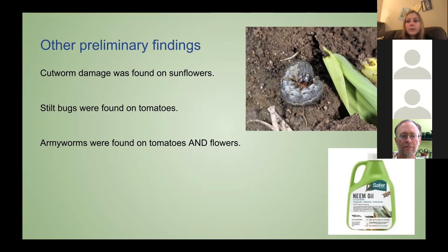I'm hoping that more research comes out on stilt bugs so I know how to treat them, because right now we're not really sure. For cutworms, you can use Bt. Armyworms also can't be seen on sticky cards — they were found on tomatoes and flowers and cause really bad damage for both, eating the leaves, blooms, and even the tomatoes. The main ones we found were yellow-striped armyworms, and I did recommend Bt for those too. I think the Bt helped, but it didn't completely get rid of all of them.